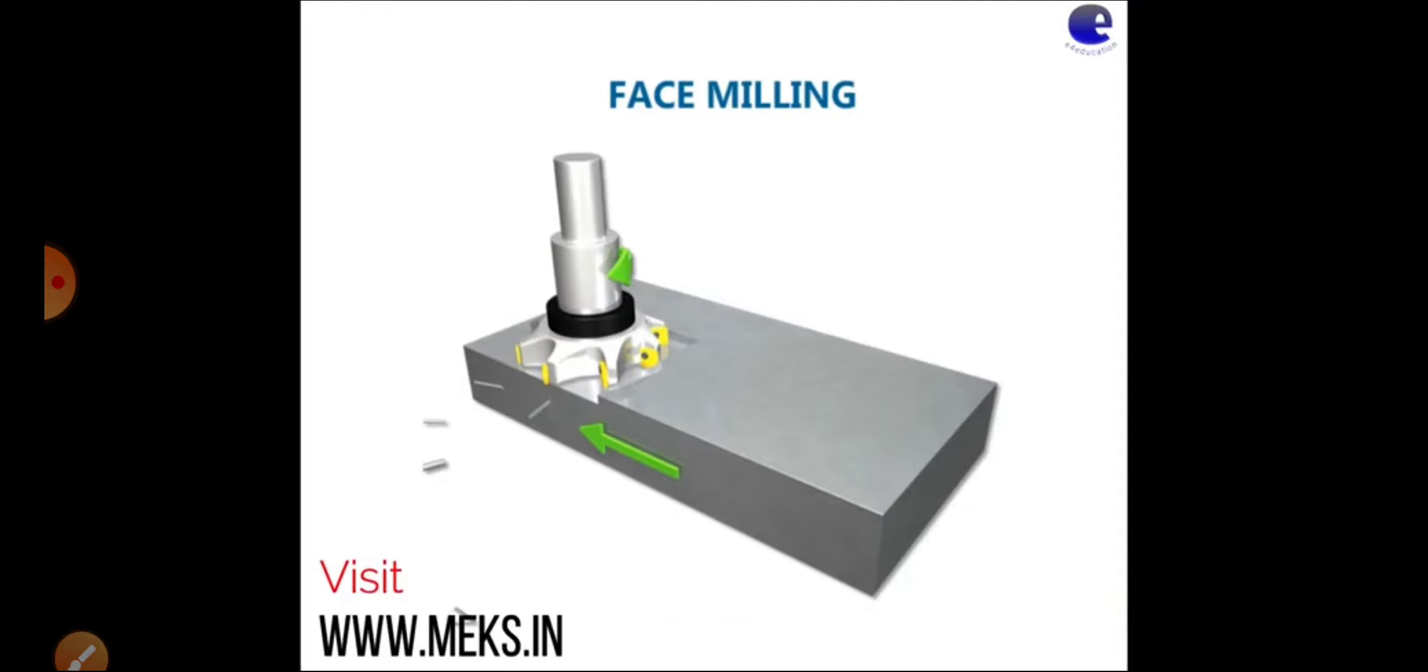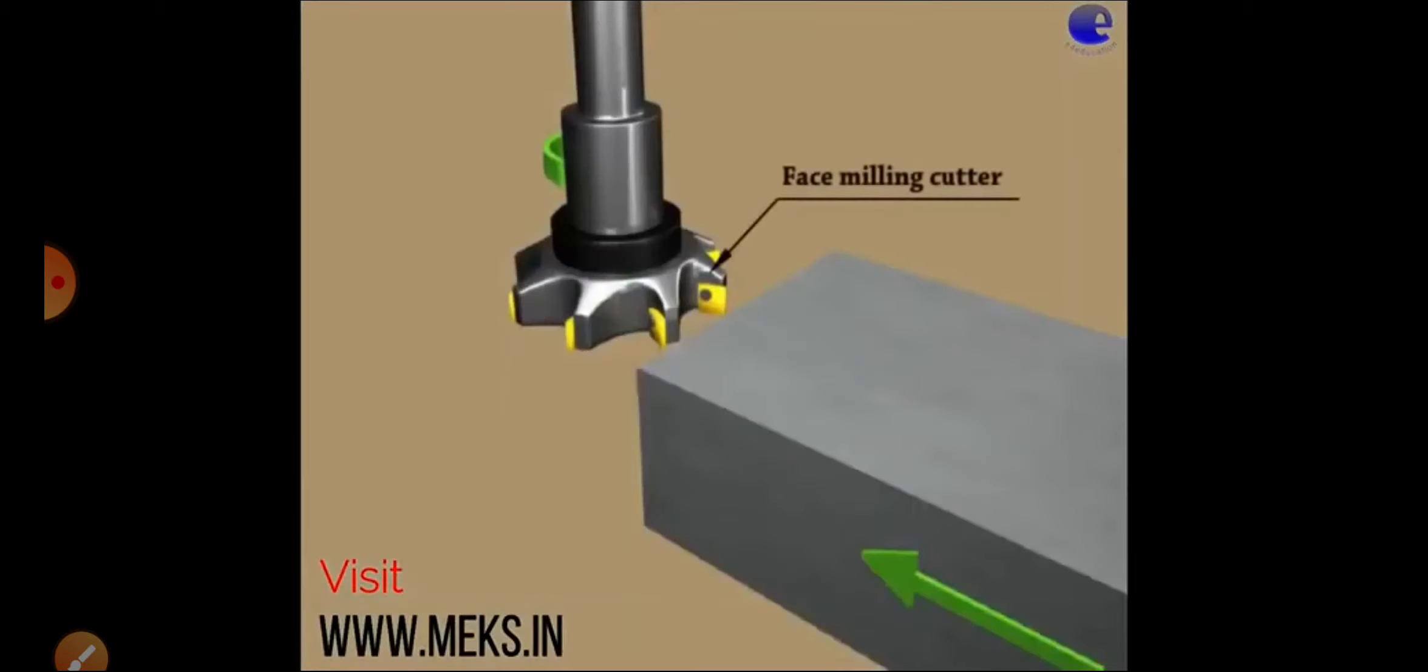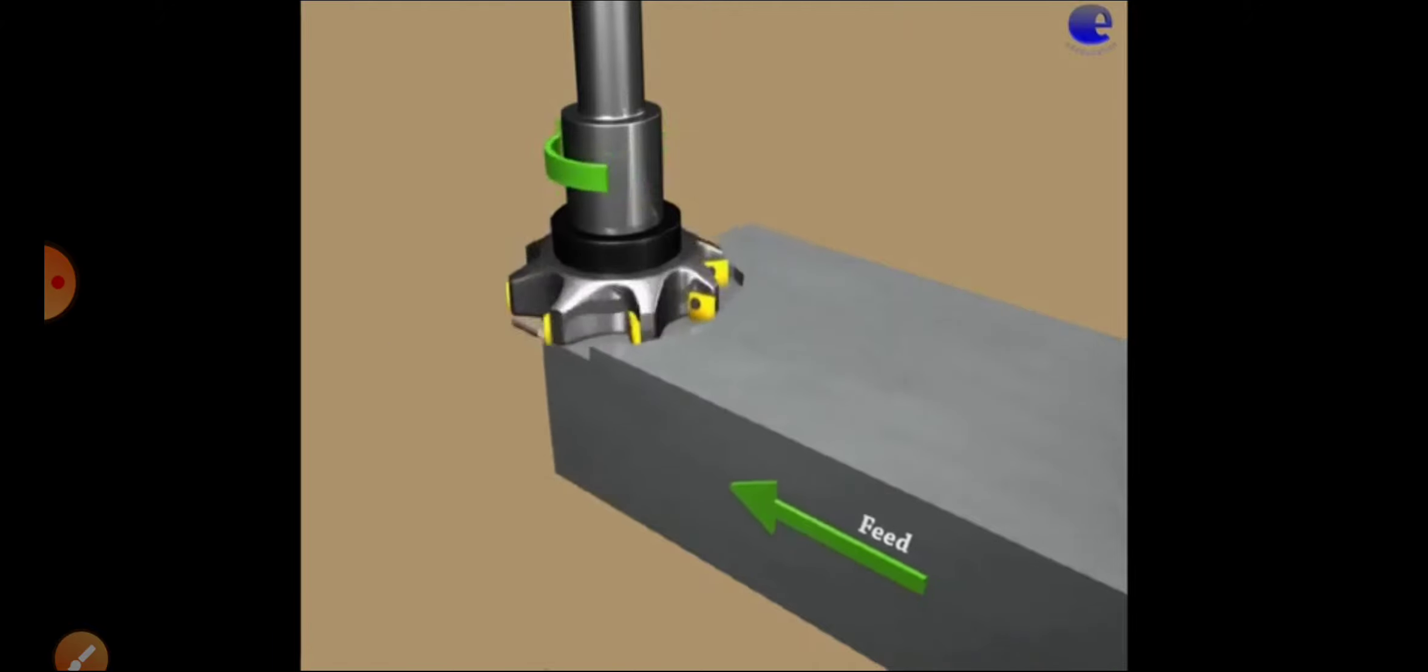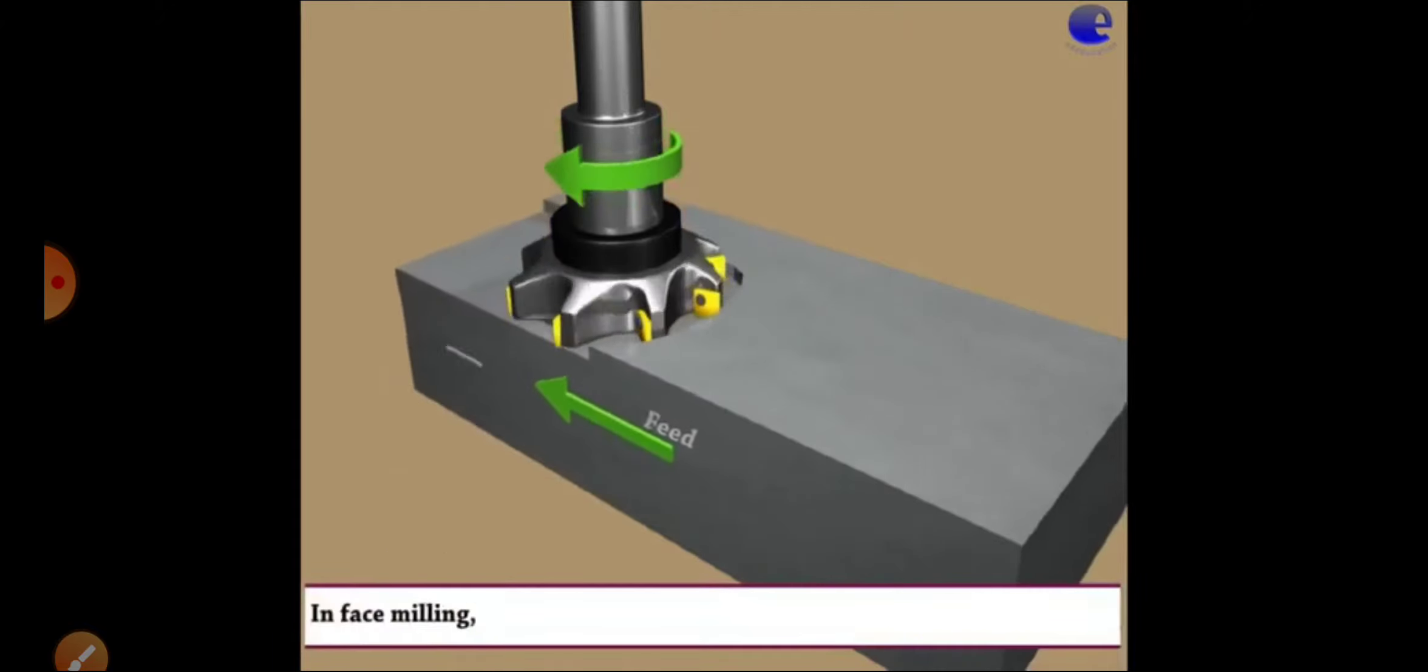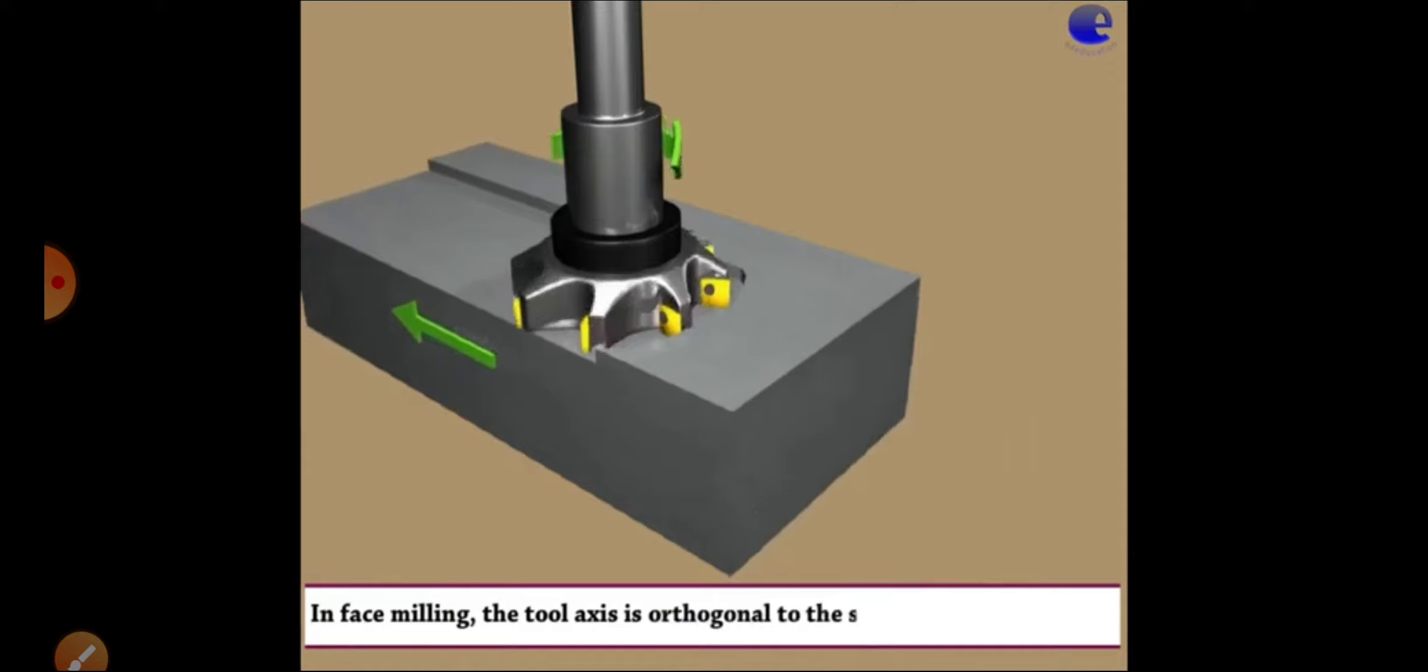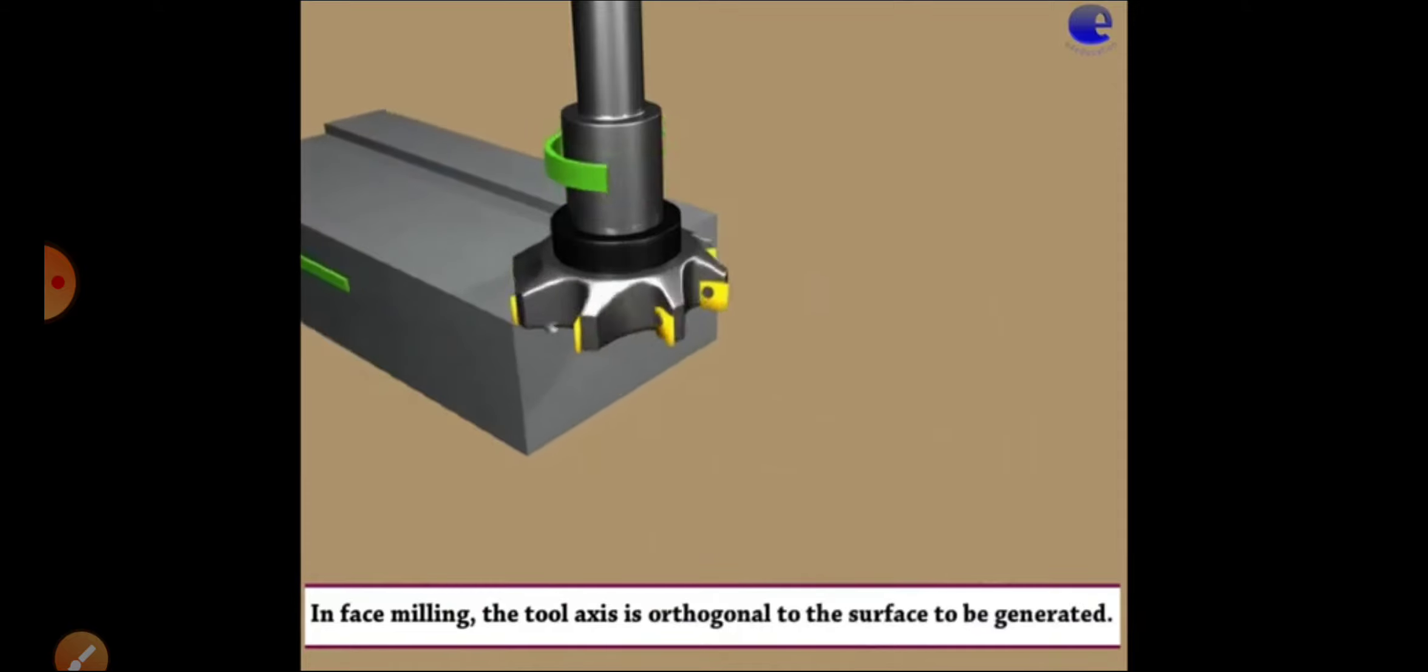After plane milling, next is face milling. This is the face milling cutter whose sides and bottom end cutting edges are used to machine the top surface of the work piece. This is the face milling operation.